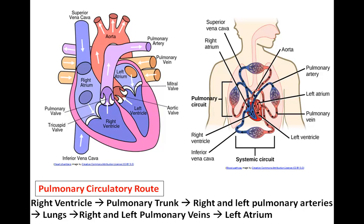Now let's take a look at the pulmonary circulation route. The route begins at the right ventricle, which has been filled with deoxygenated blood from the right atrium. The right ventricle pumps this deoxygenated blood into the pulmonary trunk, which branches into the right and left pulmonary arteries, then into arterioles leading into capillary beds within the lungs. Oxygen diffuses from the lungs' alveoli into the capillary and carbon dioxide diffuses from the capillary into the alveoli. The now oxygenated blood flows into venules, merging into larger veins, and the right and left pulmonary veins carry oxygenated blood back to empty into the left atrium.